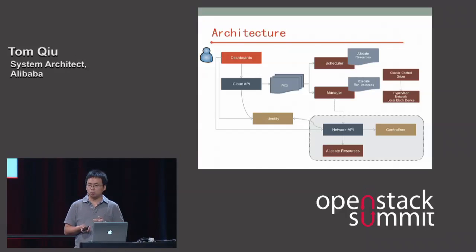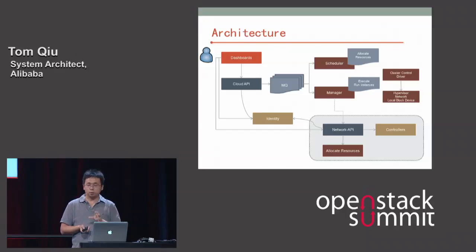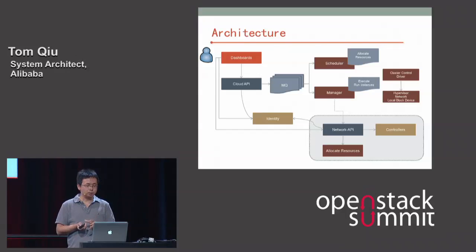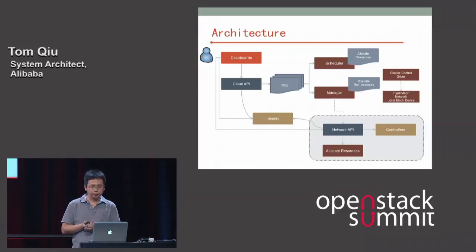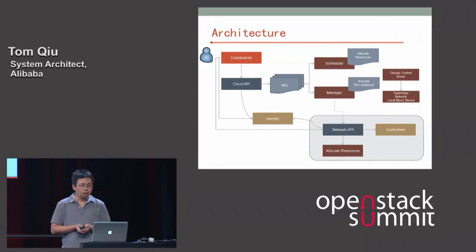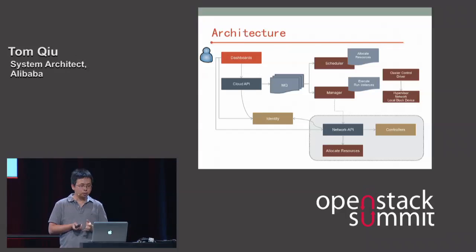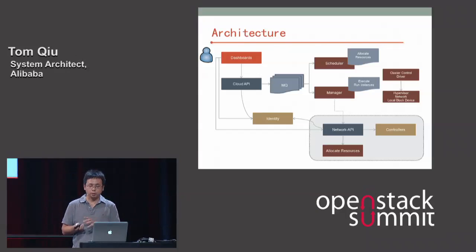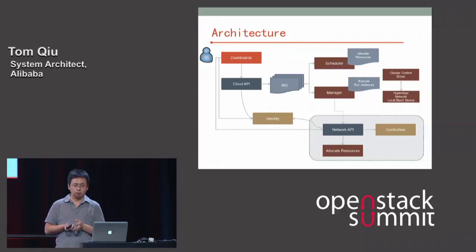This is a flowchart showing the user workflow. The Cloud API is the main interface for dashboards. Engineers use dashboards to control the system. When a request comes in, the Cloud API accepts it, checks authority, and puts it into the message queue. The scheduler gets the request and decides how to schedule it — the core resource allocation algorithm is implemented in this component. When scheduling is complete, it puts the request back into the message queue, and the manager component reads the allocation information from the database.